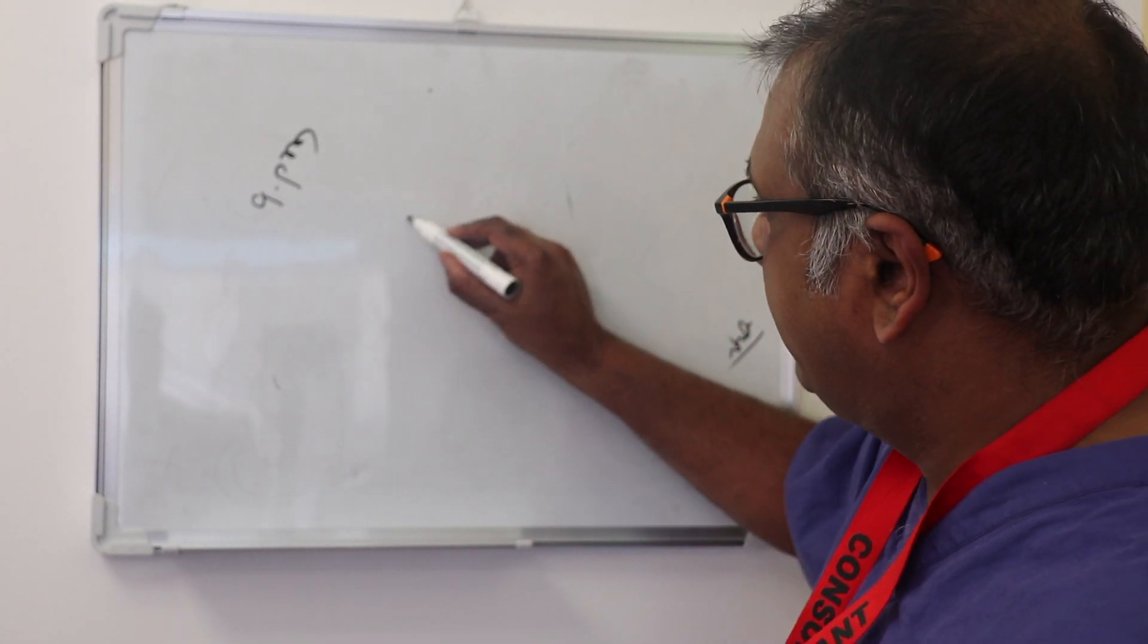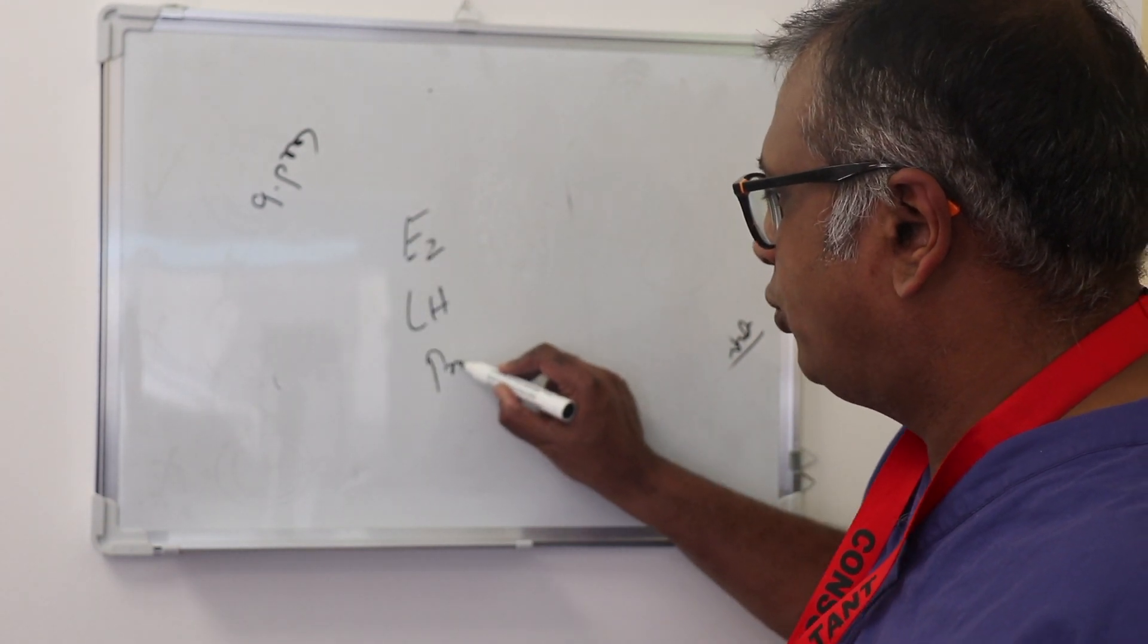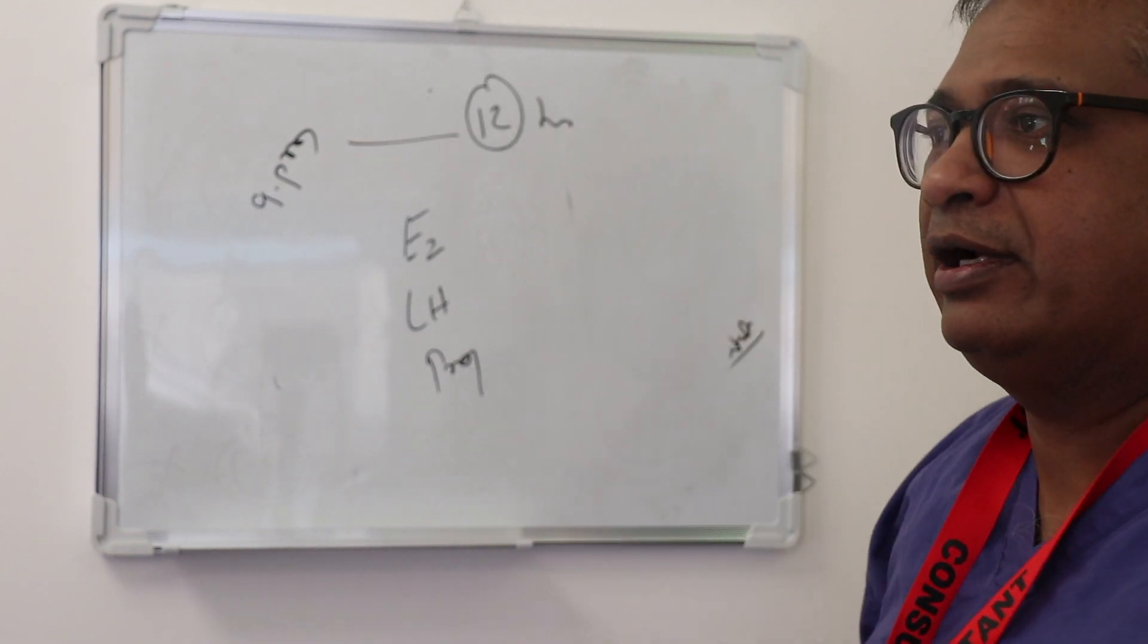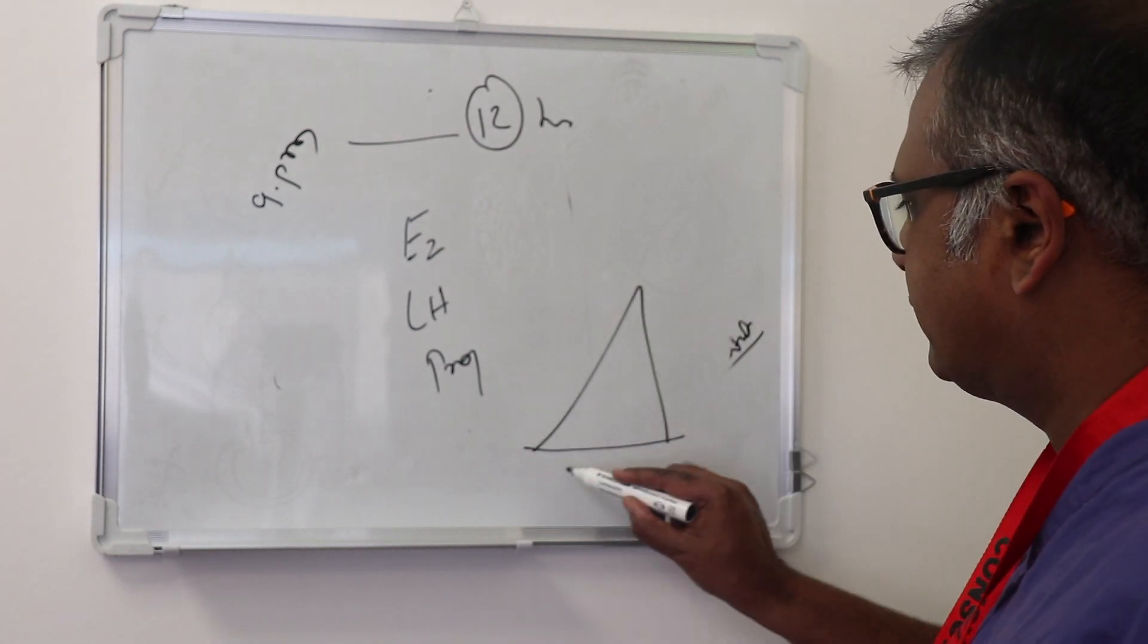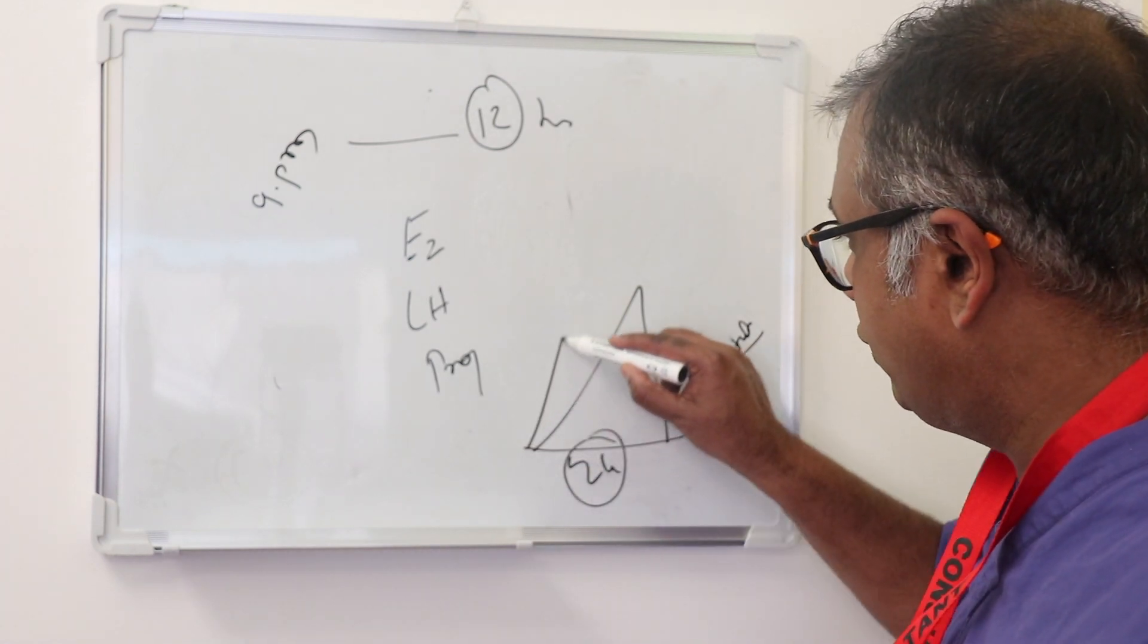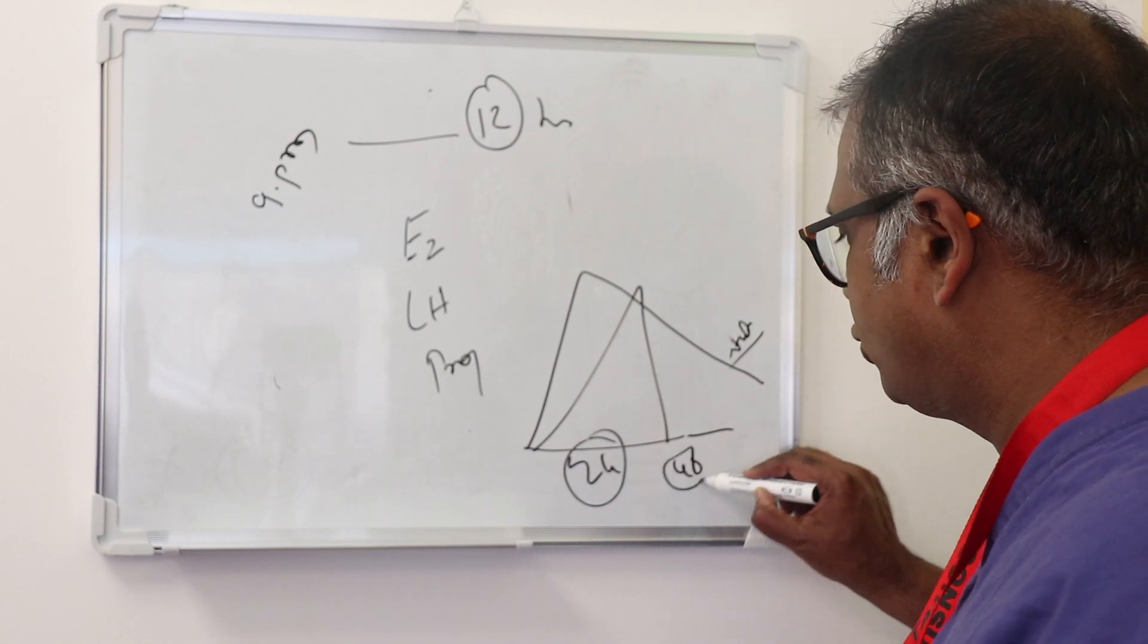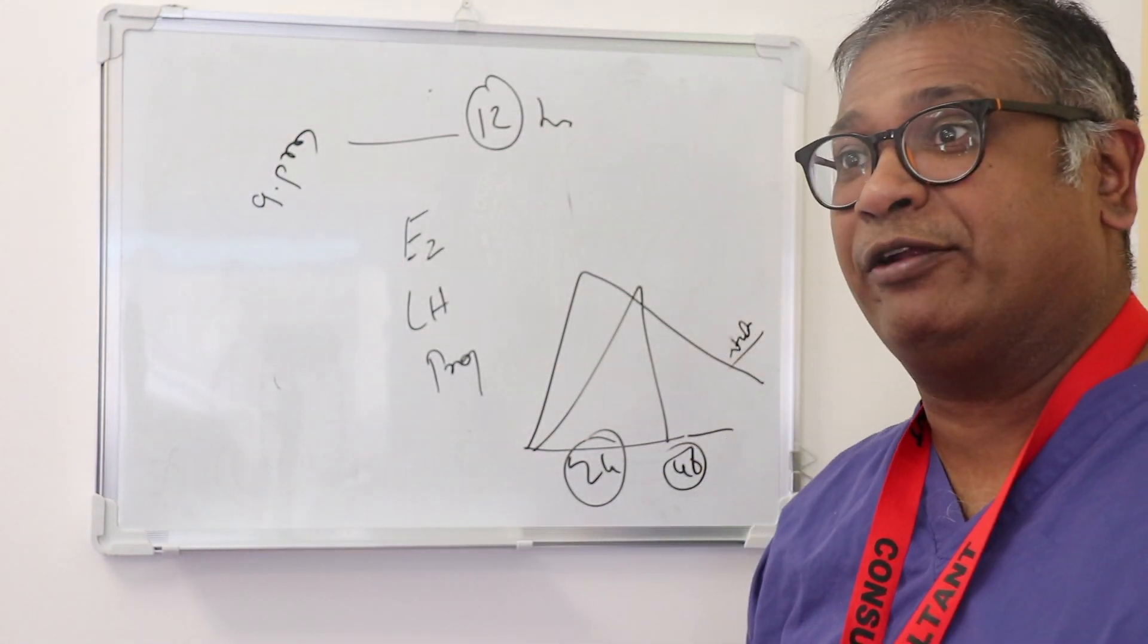I do an E2, LH, and progesterone 12 hours later after the analog trigger. Why? Because the peak is faster. In 24 hours the analog trigger is gone—in nature it's 48 hours. So your analog trigger, the LH activity, has been shortened by 24 hours.